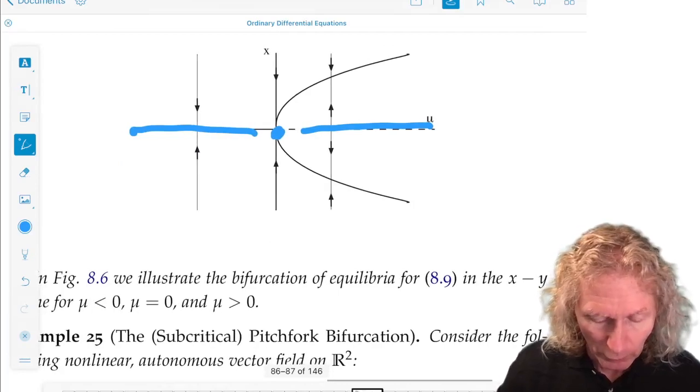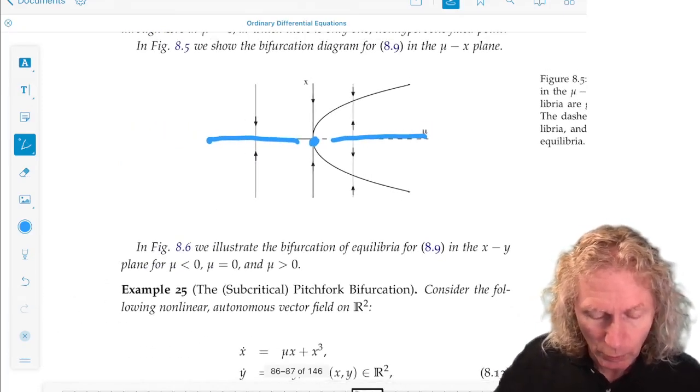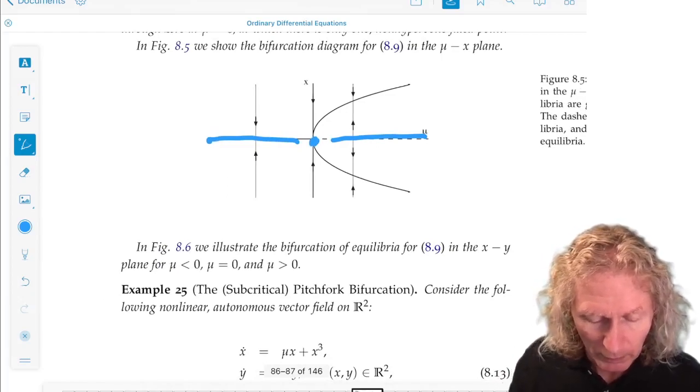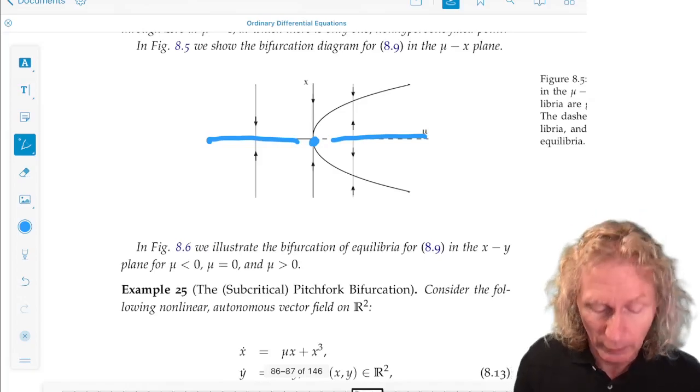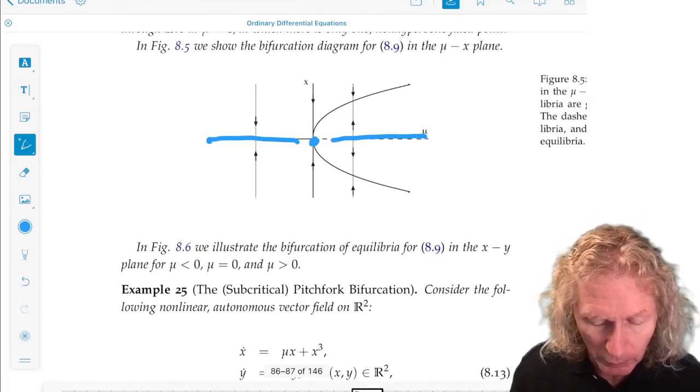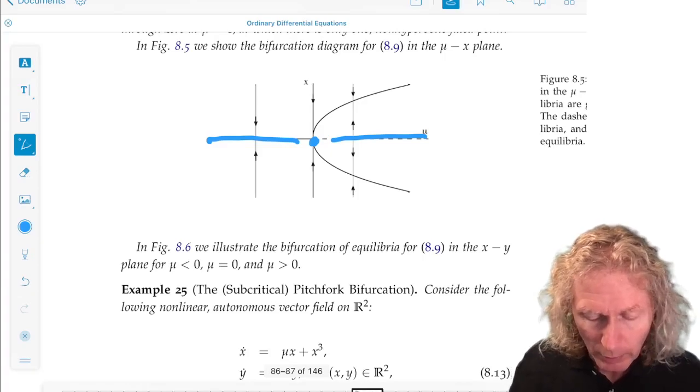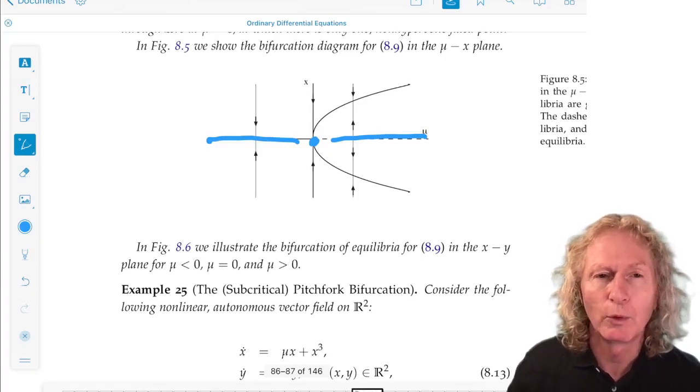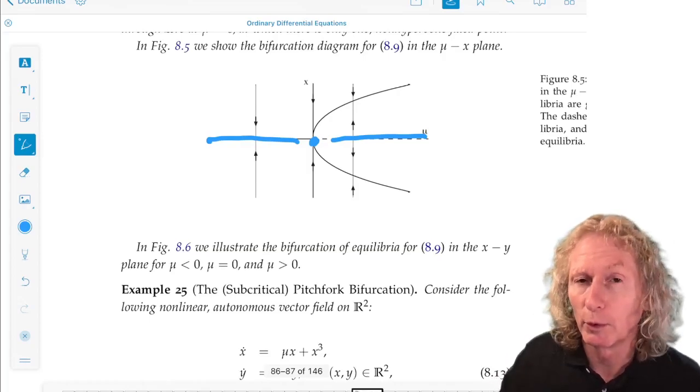The word supercritical is often used to denote this type of situation. It's also often referred to as a soft loss of stability. Because as you move, μ goes from left to right, the stable equilibrium just smoothly increase or vary for μ greater than 0.